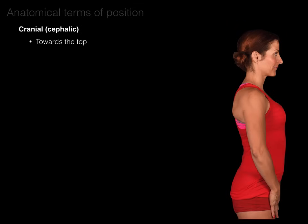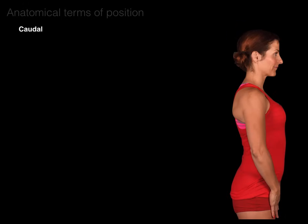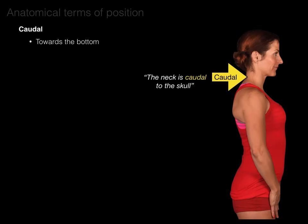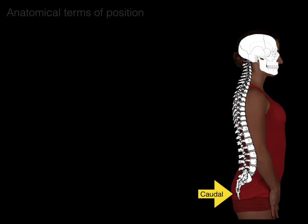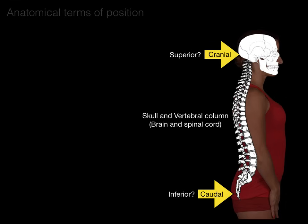Next, cranial or cephalic means towards the top. For example, the skull is cranial to the neck. Then there's caudal, which means towards the bottom — the neck is caudal to the skull. Some of you may be saying, didn't we just cover that? Isn't caudal the same thing as inferior? These two terms, cranial or cephalic — meaning towards the head — and caudal — meaning towards the tail — are primarily used with regards to the skull and vertebral column or brain and spinal cord.